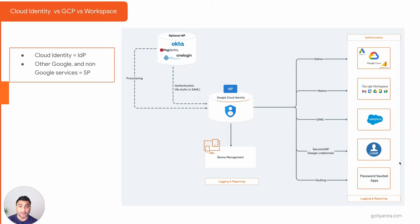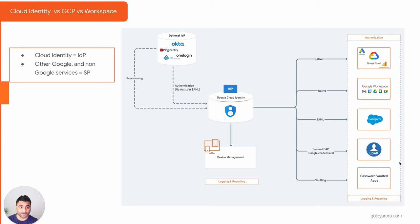Google Cloud Identity is also capable of acting as identity provider, service provider, or both. There is an optional layer where you can have Okta, Azure AD, Ping, or OneLogin as your optional identity provider, which can provision identities to Google Cloud Identity and also do authentication to Google Cloud Identity. This is optional — if you have already invested in one of those identity providers you may leverage those investments; if not, you can work directly with Google Cloud Identity as your identity provider.